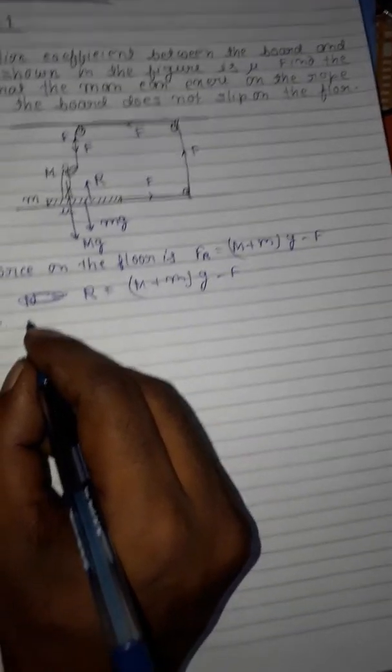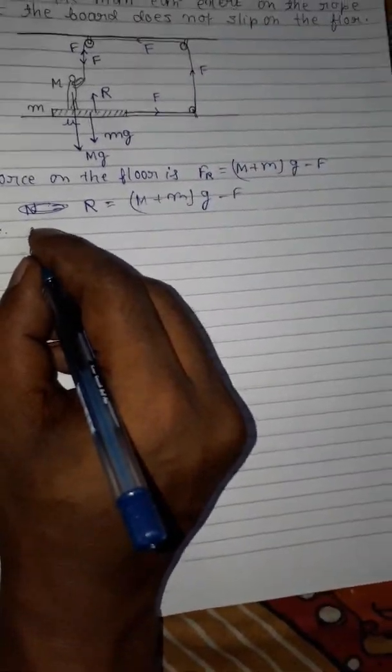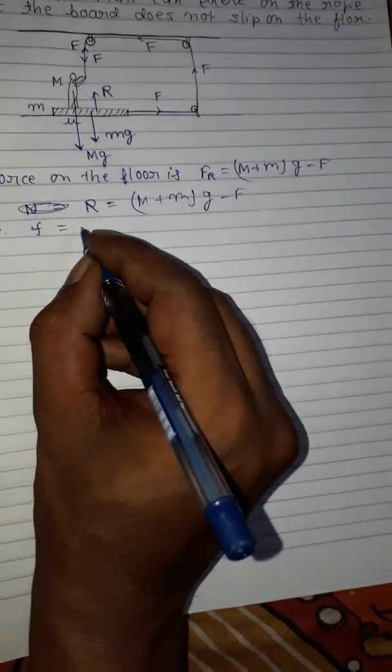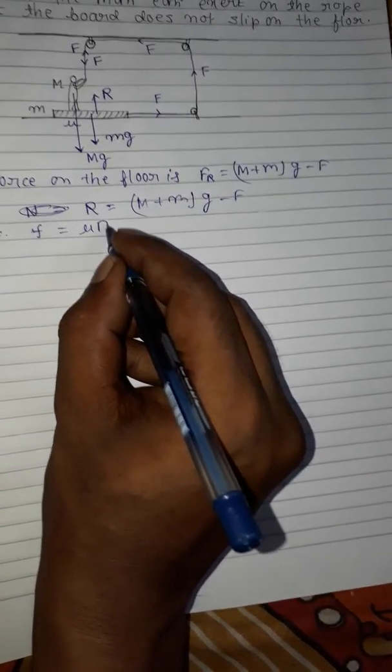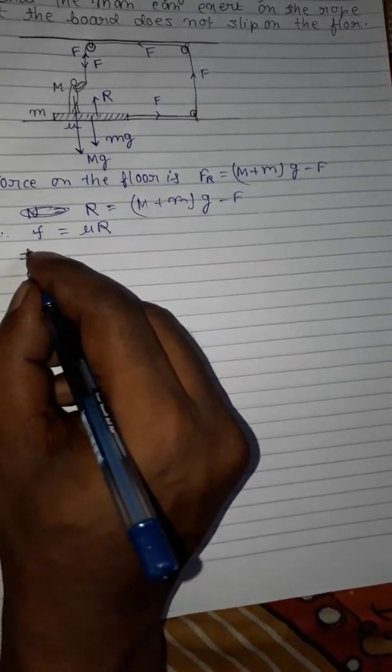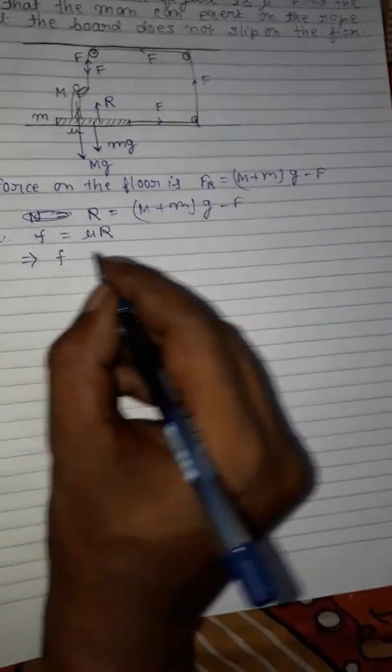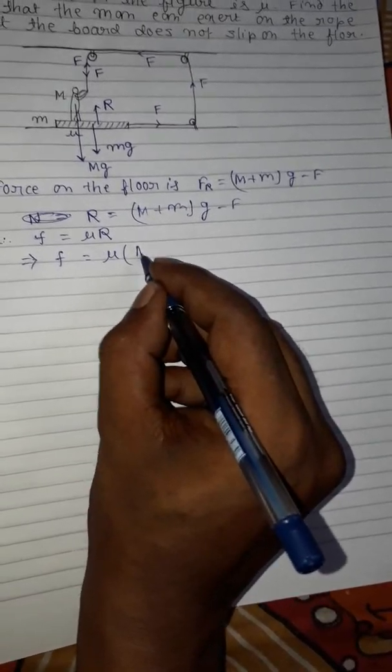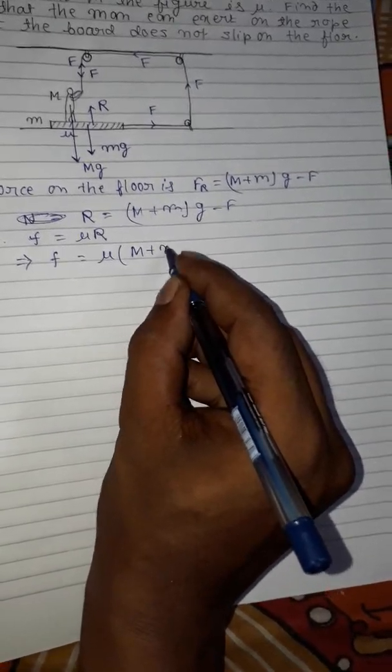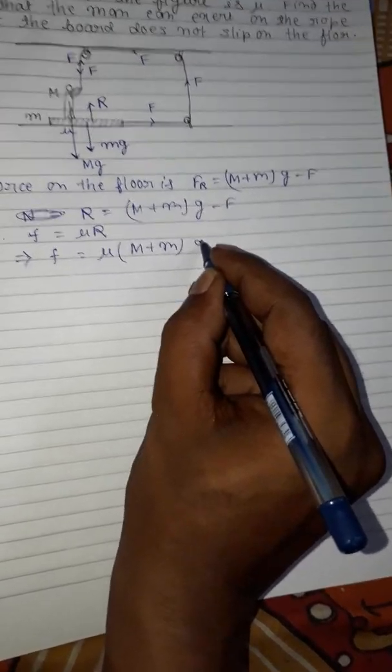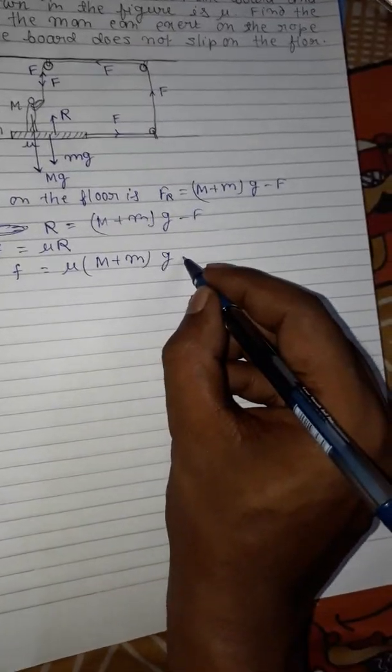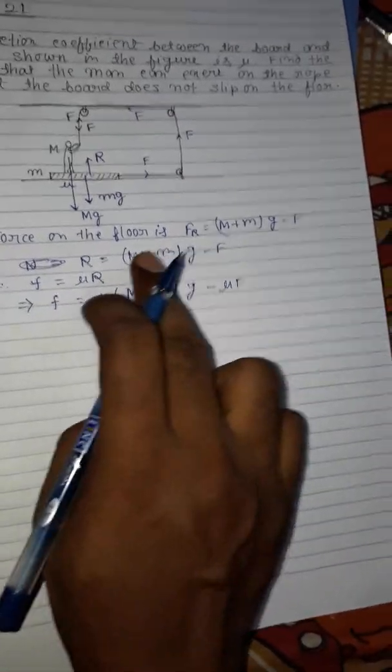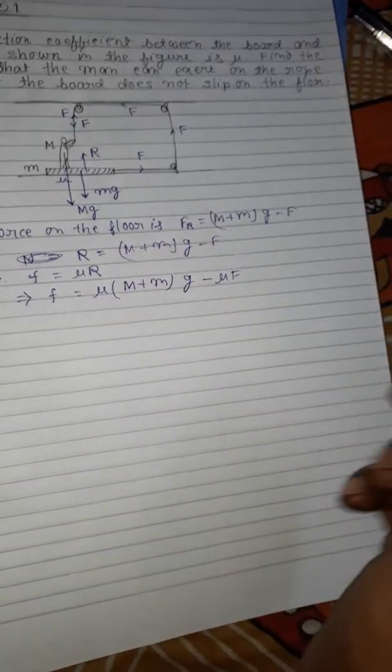Therefore the friction force equals μR, which equals μ(M + m)g minus μF.